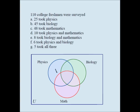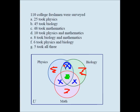One thing you really have to understand: these people took only physics, these people took only math, these people took only biology. These people took all three. These people took physics and biology but not math, these people took math and biology but not physics, these people took physics and math but not biology. Sometimes we say these people took only physics and biology, these people took only biology and math, these people took only physics and math.